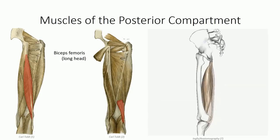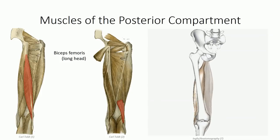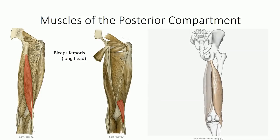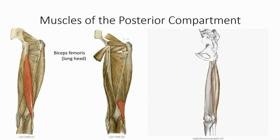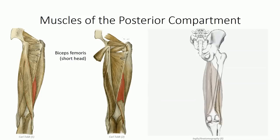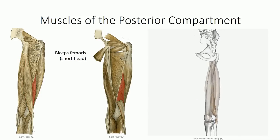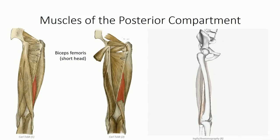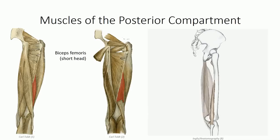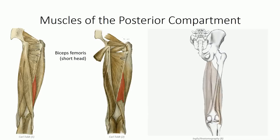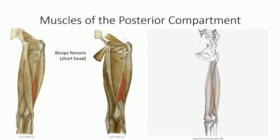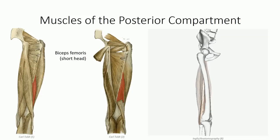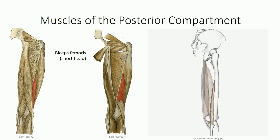The long head runs obliquely from its origin off the ischial tuberosity to insert laterally on the head of the fibula. The short head takes a more direct route, originating off the posterolateral surface of the distal shaft of the femur. It blends with the long head to insert on the head of the fibula.